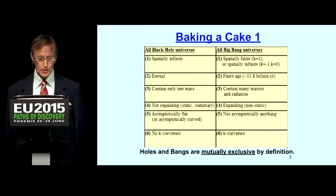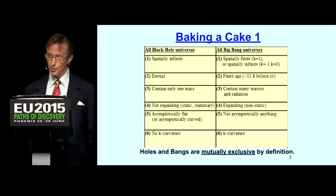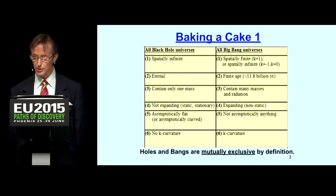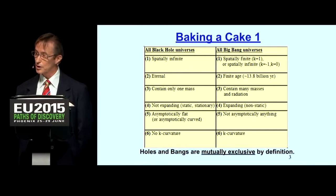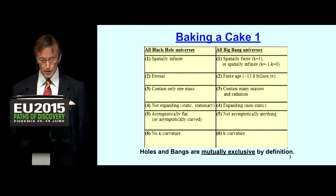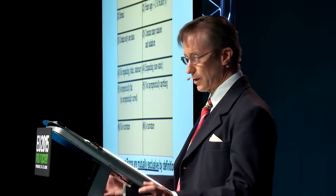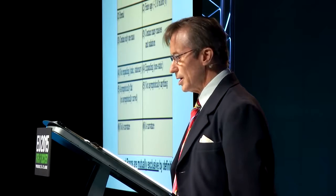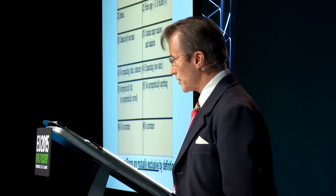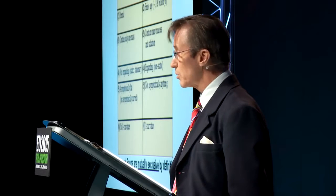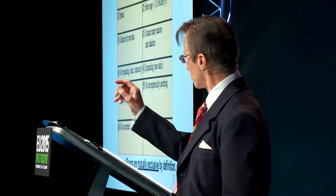Black hole universes are spatially infinite. There are three types of Big Bang universes: one spatially finite, and the other two spatially infinite depending on their k curvature values. The black hole universe is eternal — it's static, it doesn't depend on time — whereas Big Bang universes are all finite in age, at 13.8 billion years, now tweaked to 13.9 billion.